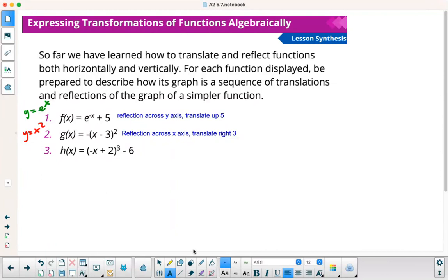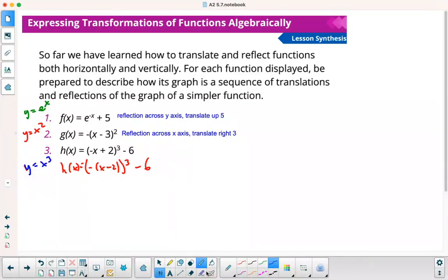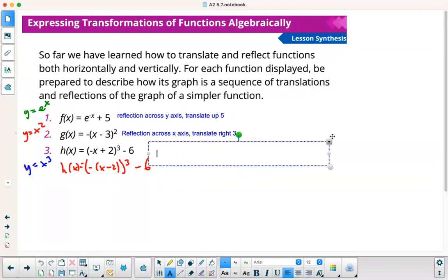This one's a little tricky because you technically got to get this factored here. What you really want to do is change this to negative x minus 2. My most basic one would be y equals x cubed. So from there, what's happening? The negative on the outside, well, it's on the inside of the cube, it's on the outside here. This negative tells me I'm reflecting across the y-axis. The minus 2 on the inside means it's going to translate right 2. And then the minus 6 on the outside is translate down 6.